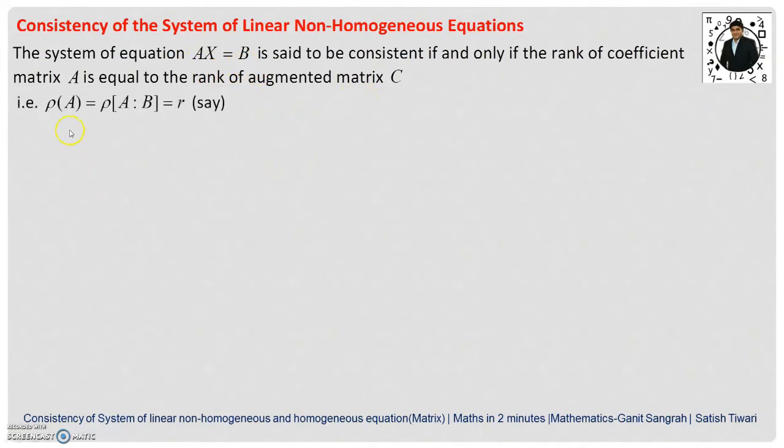Symbolically, we represent as rank of A equals rank of [A:B], this is our augmented matrix which we suppose as R.